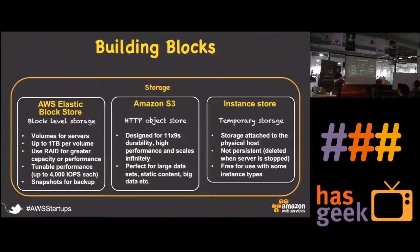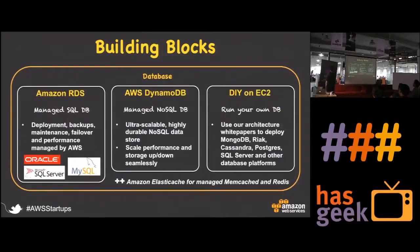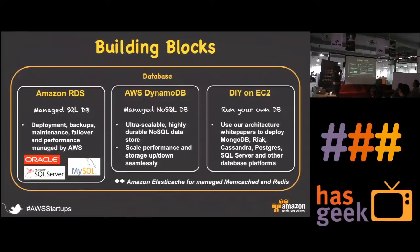Instance stores are direct-attached storages available within EC2 instances — ephemeral in nature. For databases: RDS is the Relational Database Service with MySQL, Oracle, SQL Server, and PostgreSQL options. DynamoDB is a low-latency, highly consistent NoSQL database — you don't need to provision capacity, it scales automatically depending on load, or you can fine-tune it. You can also run your own databases on EC2.